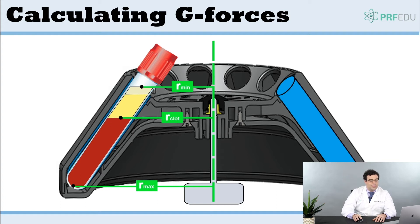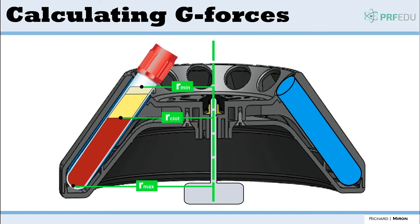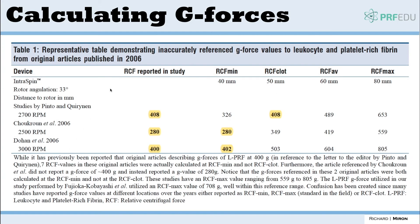I want to discuss the literature from 2001 and 2006 onwards and address the issues created in the field, and more importantly what we need to do as a dental community to advance this field. There were reports by different groups comparing RCF values to initial studies. Originally, some of the work by Chakroon and colleagues reported RCF values at the RCF min, and Dohan also calculated at the RCF min. Later, people started using RCF clot as well as RCF max, causing a lot of confusion.